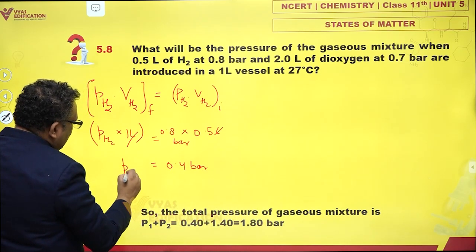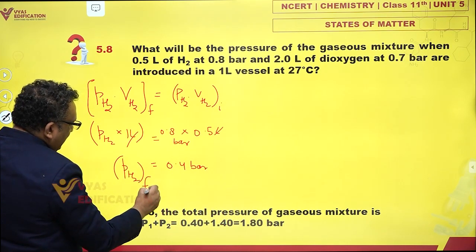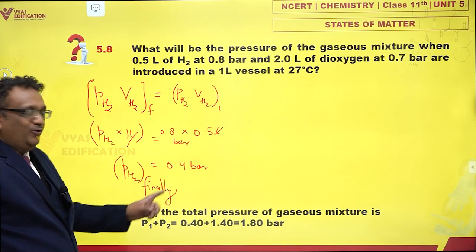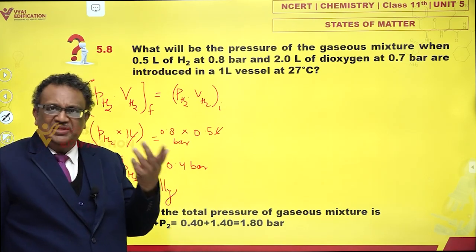So let us see how much is this. This is 0.4 bar. The partial pressure of hydrogen finally is 0.4 bar.